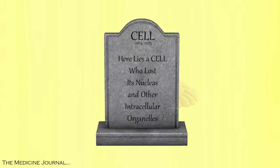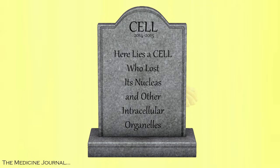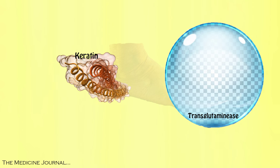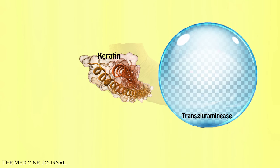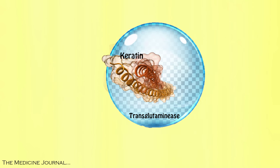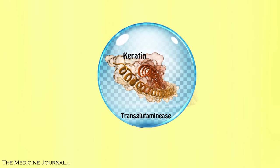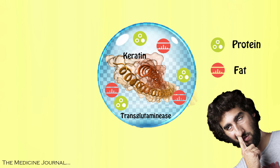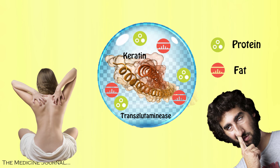When the cell dies, it loses its nucleus and other intracellular organelles. What is left over is hardened keratin. An enzyme known as transglutaminase begins to enclose the keratin in an insoluble mixture of different proteins and fats. The end result is the hard nails we use to pick noses and give back scratches.